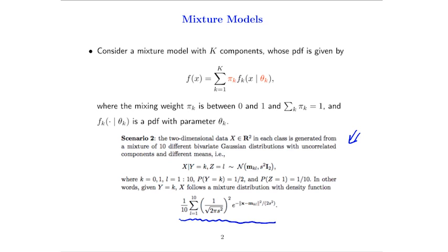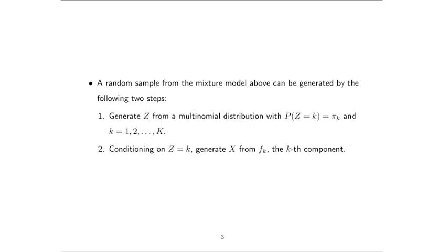For a mixture model like this, consider the generating process as follows. First, generate a label Z which takes values from 1 to K, from a discrete distribution with probability P(Z = k) = π_k.